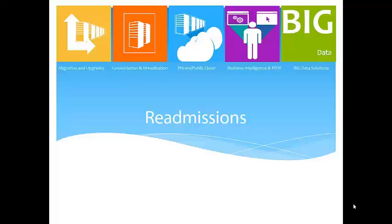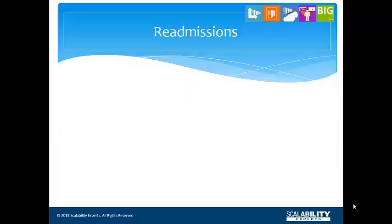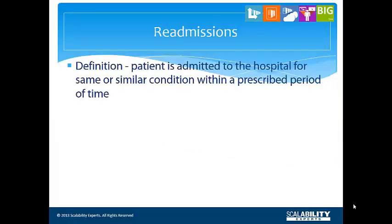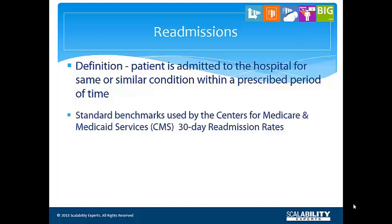Let's talk about readmissions. A readmission occurs when a patient goes back into the hospital for the same or a similar condition within a prescribed period of time. Quality organizations such as the Joint Commission or Centers for Medicare and Medicaid Services have defined certain types of readmissions of particular interest — 30-day readmission for acute myocardial infarction, heart failure, and pneumonia are three of them.